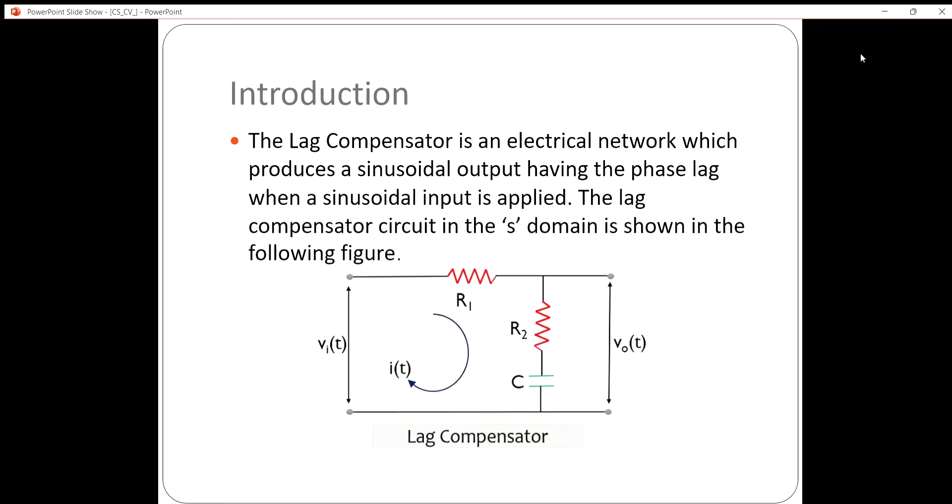Here we have the resistances and capacitances connected. The input voltage is towards the left side of the circuit and the output voltage is obtained towards the right side. We have divided this into two loops using Kirchhoff's voltage law and Kirchhoff's current law.